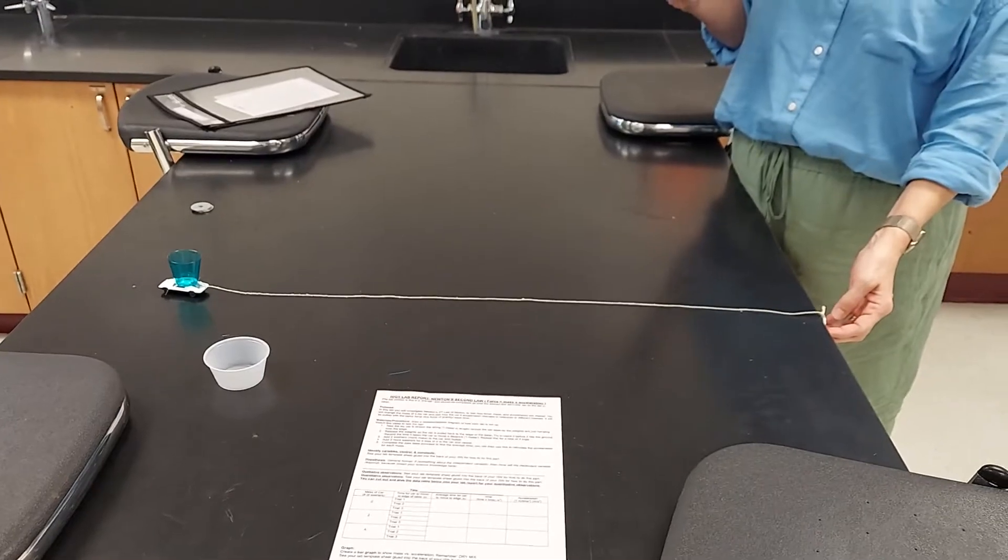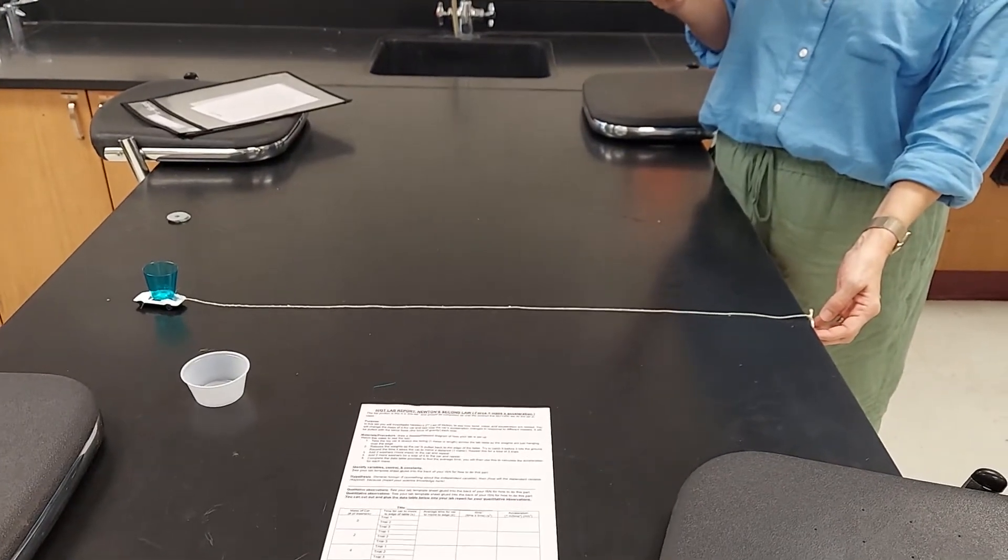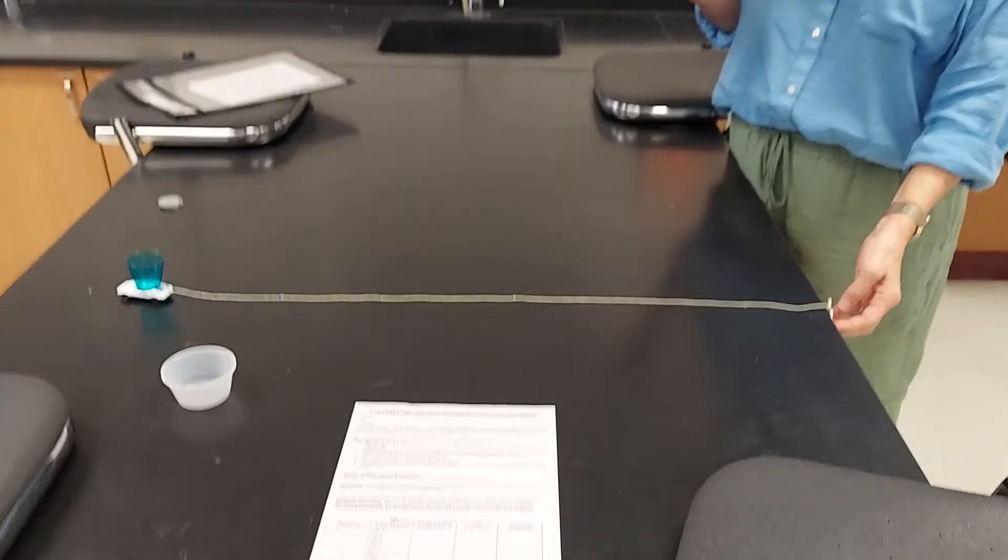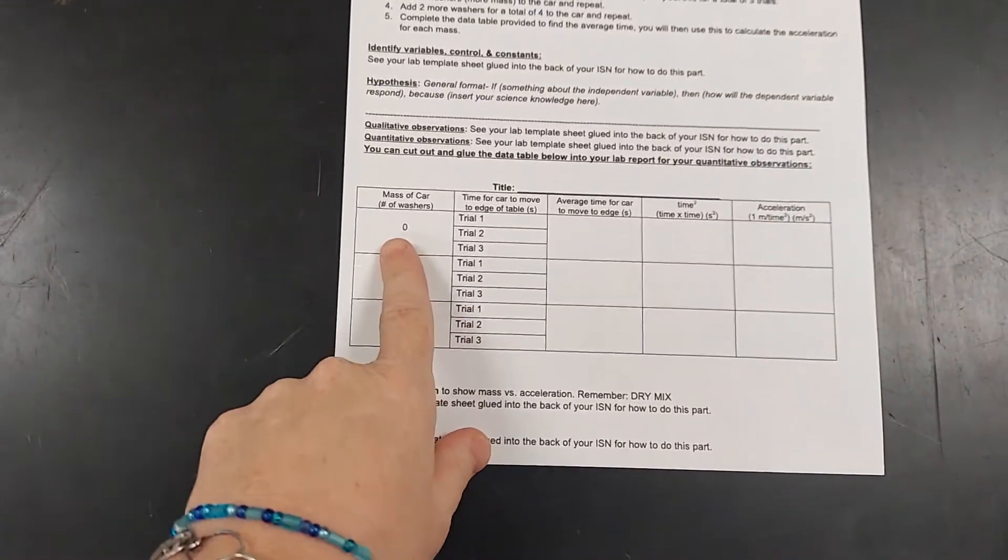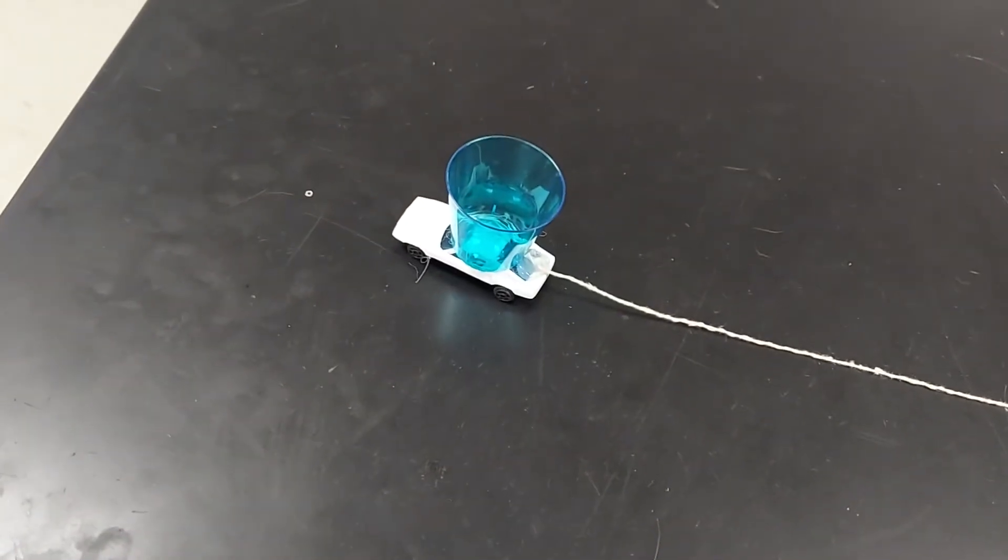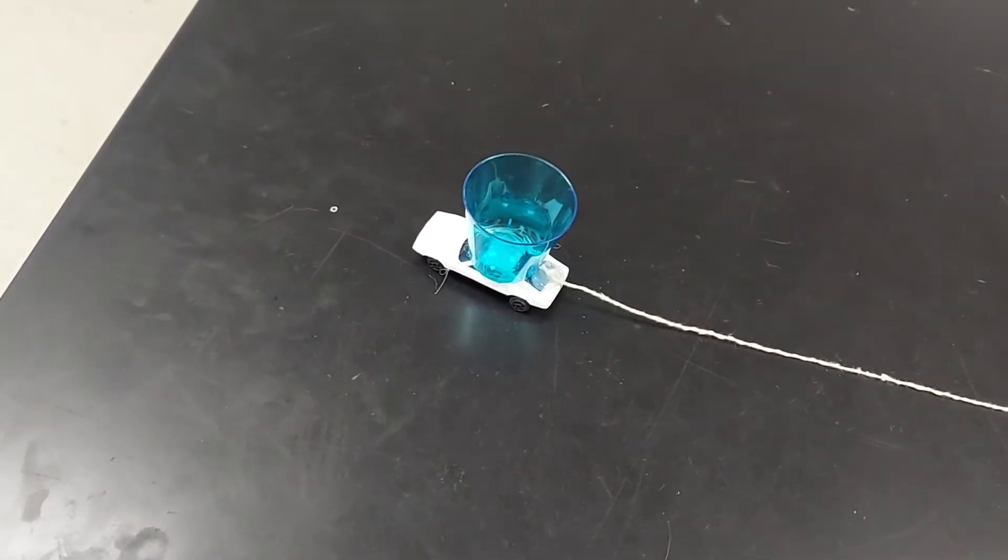We're going to measure three trials to find the time it takes the car to travel that distance. You'll be recording it in your data table. First, we'll do it without any added mass, with zero washers added to the car itself. As you can see, its little cargo compartment is empty.